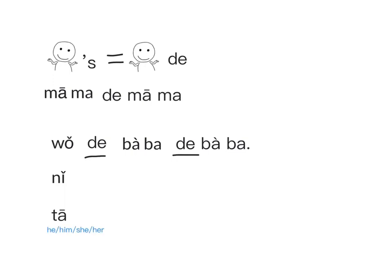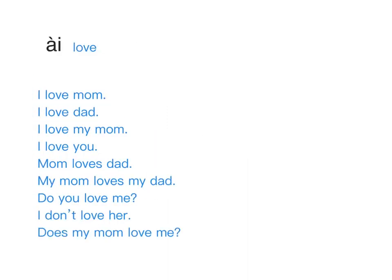In Chinese, he/him or she/her — we only use one word: 他. 他 has no gender. So we need to learn a new word: love. Love, we say 爱, fourth tone. For Chinese people, 爱 is confirming. In Chinese, verbs do not need conjugation — no matter 我爱, 你爱, 他爱, 爸爸爱, 妈妈爱, we just say 爱.